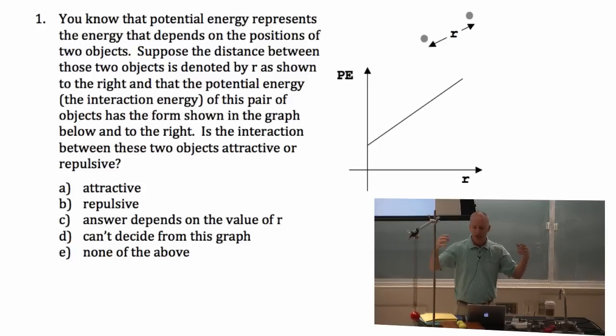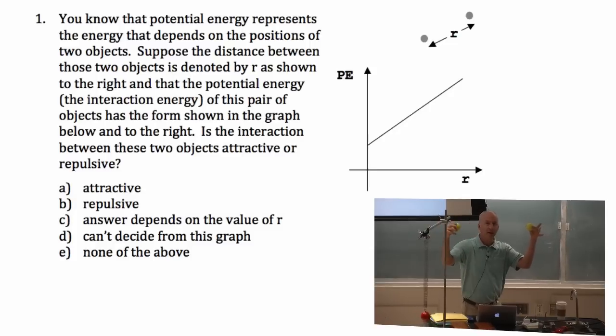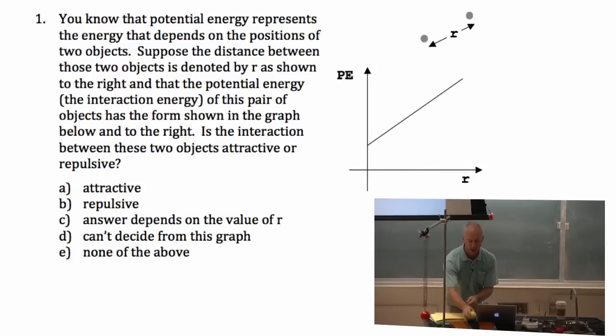An attractive interaction is when there's a force on this one pulling it that way. Toward the other one. And there's a force on this one pulling it toward that one. So, they both get pulled together. So, is this an attractive interaction? Or is it a repulsive interaction where there's a force on this one by that one that, a force on this one by this one that pushes it that way. And a force on this one that's pushing it that way. So, are they being pushed apart? Or are there forces pulling them together?